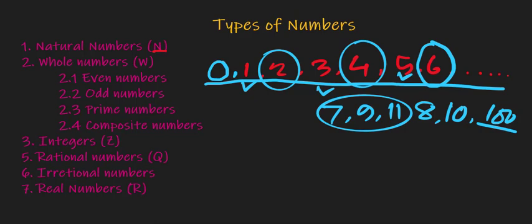What is a prime number? Going for the definition, we can say a number which has no factor other than 1 and itself is known as a prime number. For example, if we go for 2, 3, 4, 5, 7...